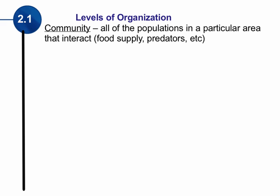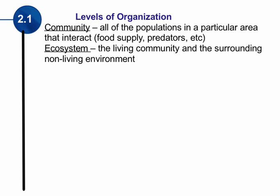A community is all of the populations in a particular area that interact. They may interact by being food, or by being a predator or prey — all the populations in a particular area interacting with each other. That includes the plants, the animals, all of the things living together. Now these living community components can't survive without the non-living environment. When we combine the living with the non-living, now we're considering an ecosystem.